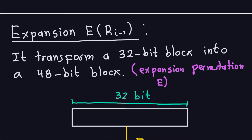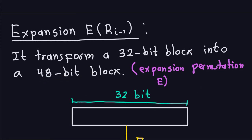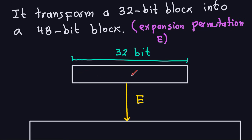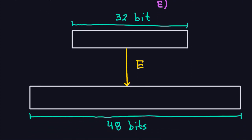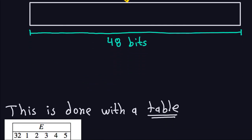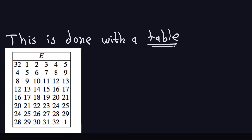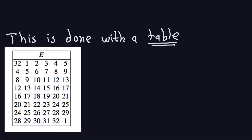The expansion permutation is done with a table, the same idea we used for the permutation. You read this table from top to bottom, left to right — the same way you read English — and the entries tell you where each bit goes.